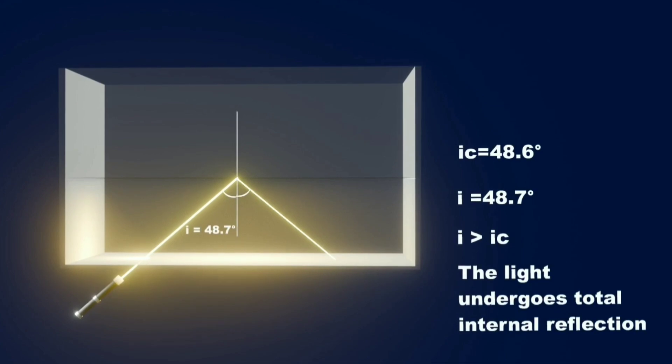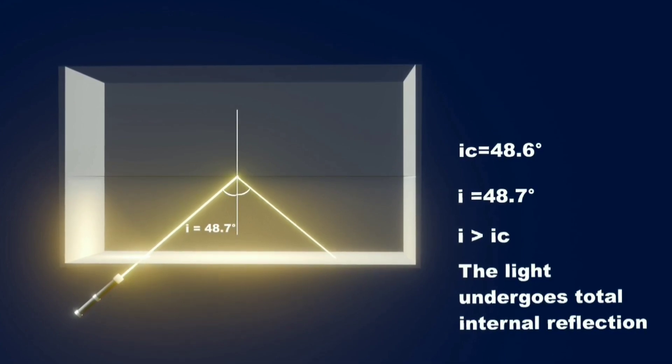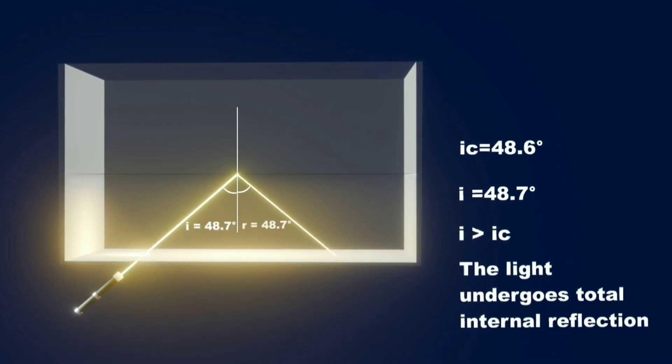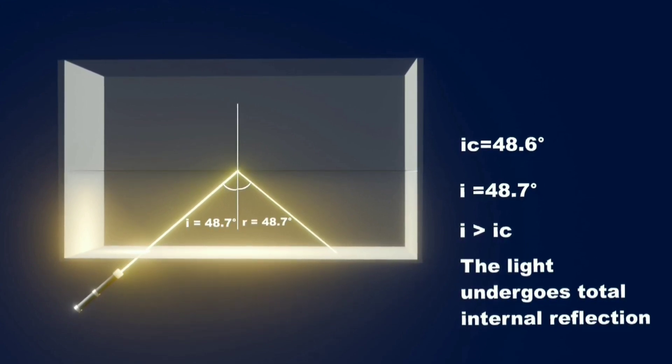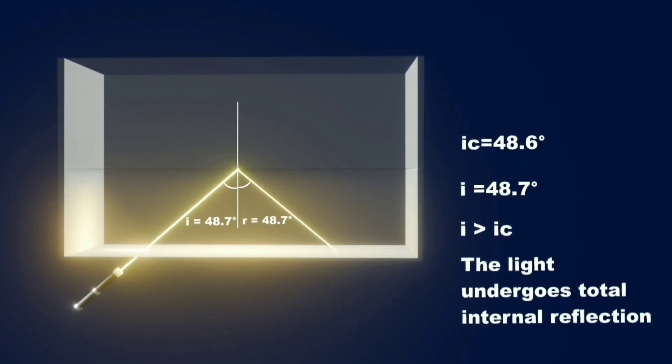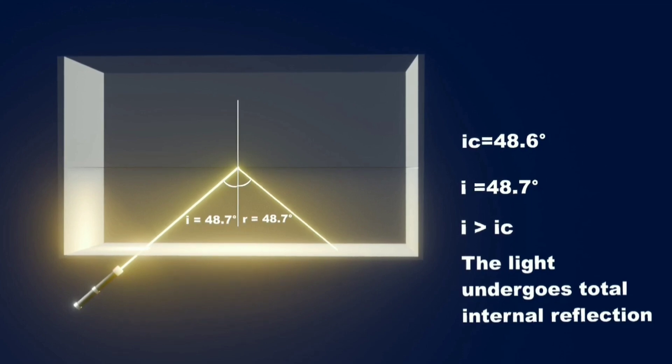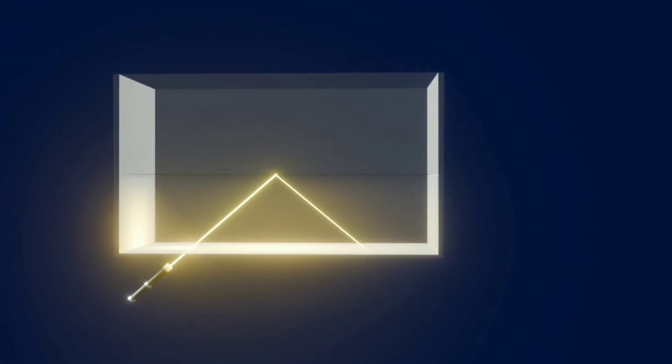Now if we further slightly rotate the light source by an angle just greater than critical angle, the refracted ray enters inside the water and makes the same angle with normal as the angle of incidence. Here the light ray has reflected in the same medium and this phenomenon is called total internal reflection.